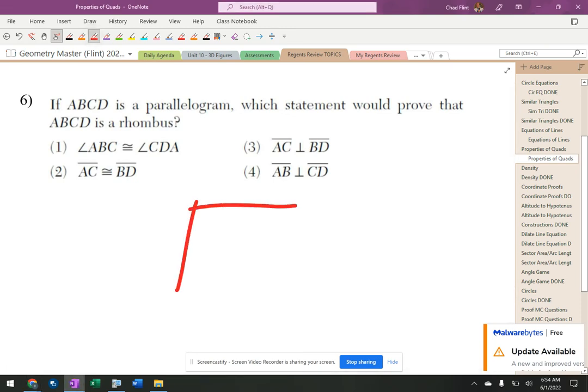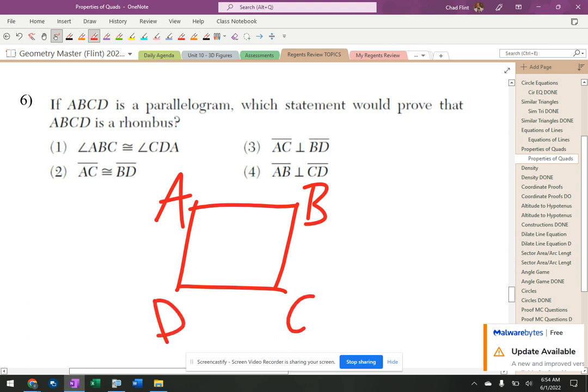Got a parallelogram, alright. Again, there's no picture, I'm just going to draw a parallelogram ABCD. Go in a circle A, B, C, D, doesn't matter where you start. What makes it a rhombus, alright?